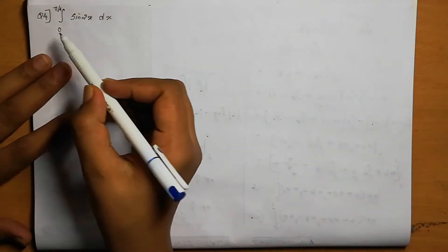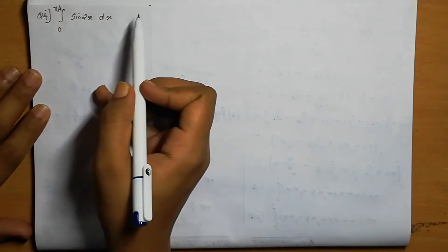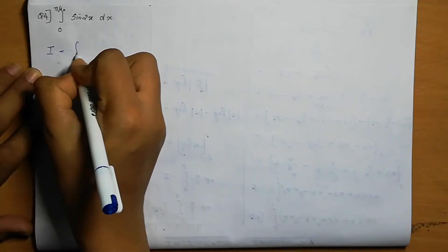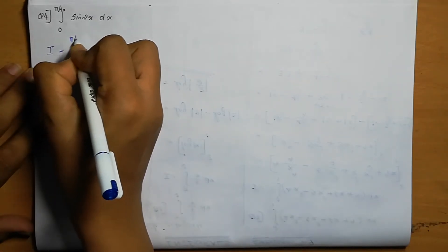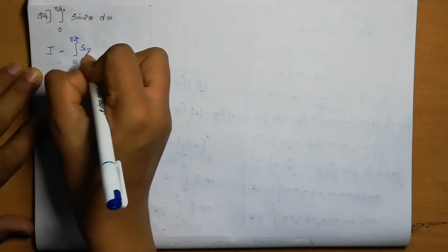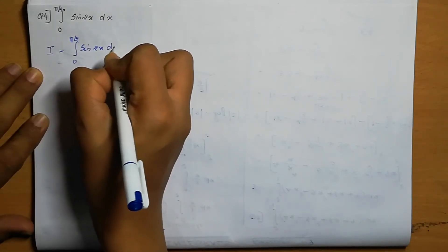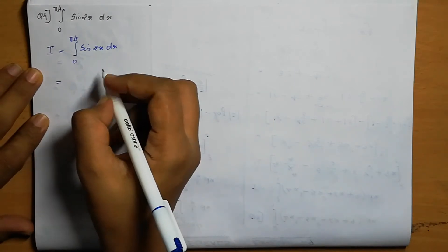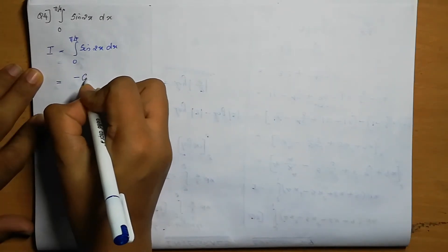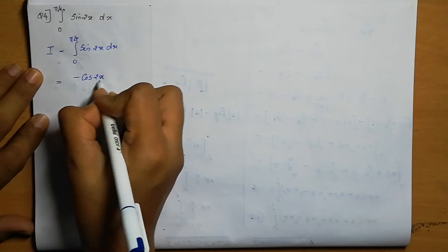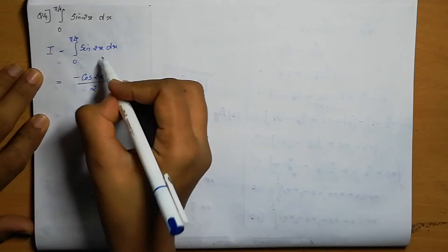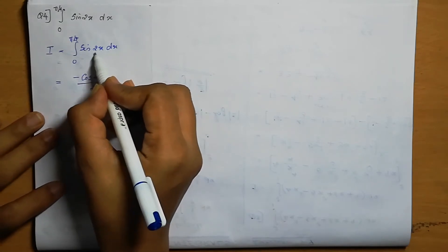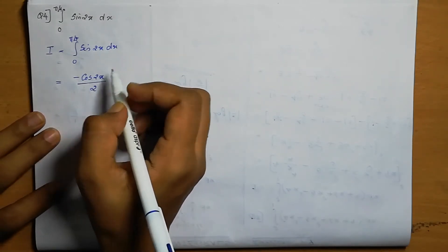Question number 4. Integral 0 to pi by 4 of sin 2x dx. First we do the integration then apply the limit. The integral of sin x is minus cos x, so here it is minus cos 2x divided by 2. This 2x in the integral means we divide by 2. So integral of sin 2x is minus cos 2x by 2.